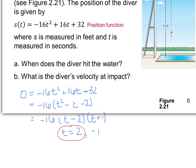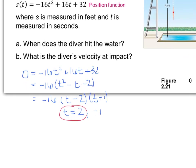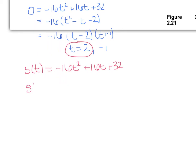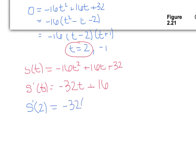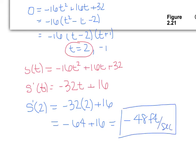Part b asks for the diver's velocity at impact. Velocity is the derivative of displacement: S'(t) = -32t + 16. Since the diver hits the water at t = 2 seconds, we evaluate S'(2) = -32(2) + 16 = -64 + 16 = -48 feet per second. That is the velocity at which the diver hit the water.